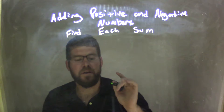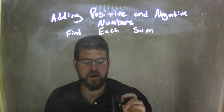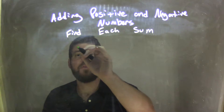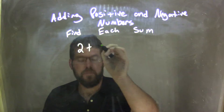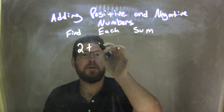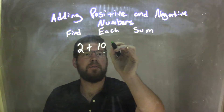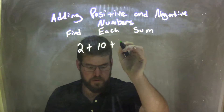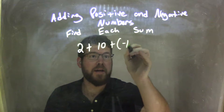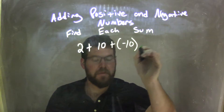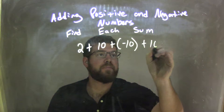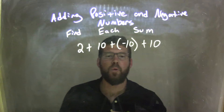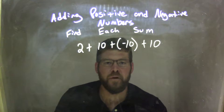So if I was given this expression of four numbers added together — 2 plus 10 plus negative 10 plus positive 10 — and I wanted to add them all together.